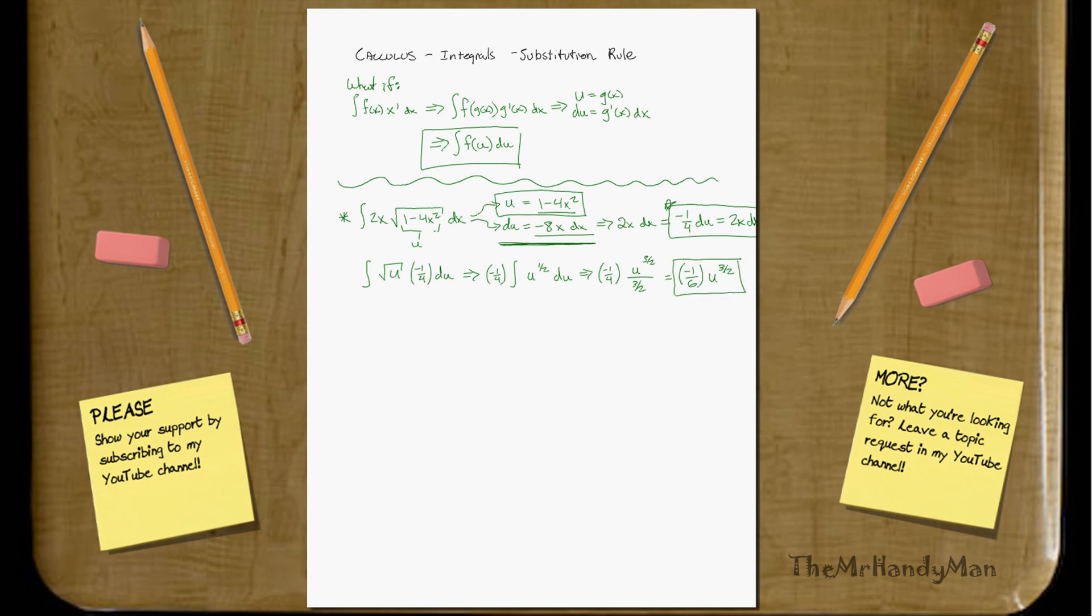Now, remember, you always should plug it back in. Or, you can just point out when u equals 1 minus 4x squared. You can also do that, but I know a lot of teachers that really hate it. So, sometimes, you have to just write it out simply. You just keep all your forms the same, and you say 1 minus 4x squared to the 3 over 2. And that is your solution.